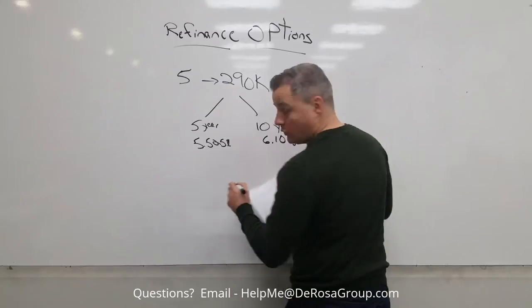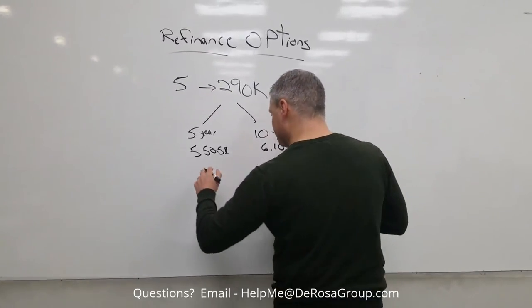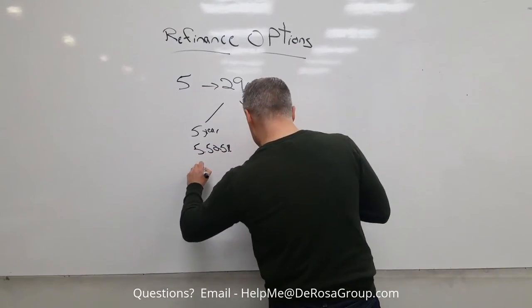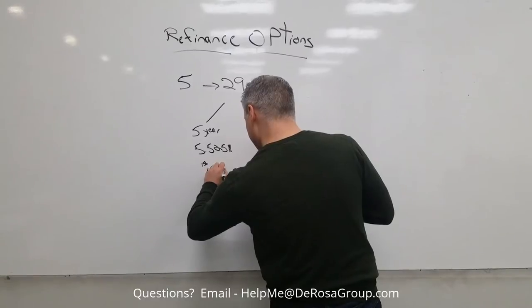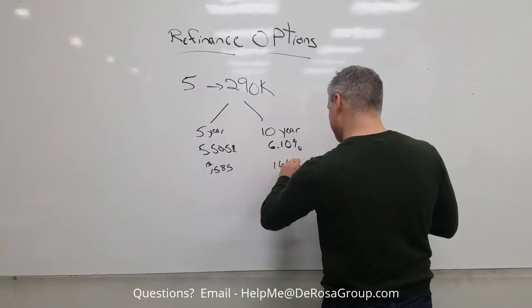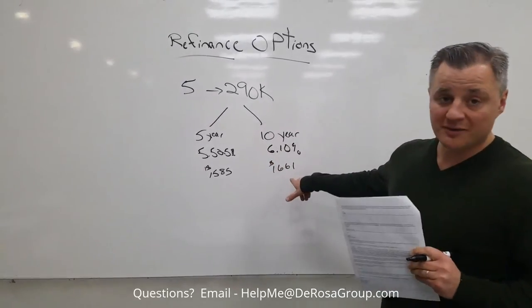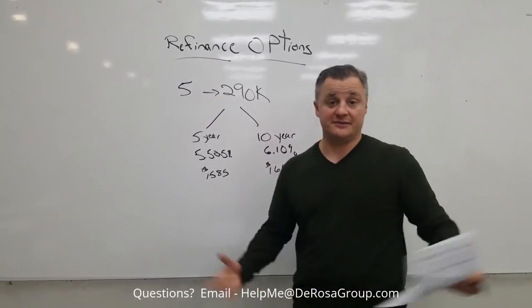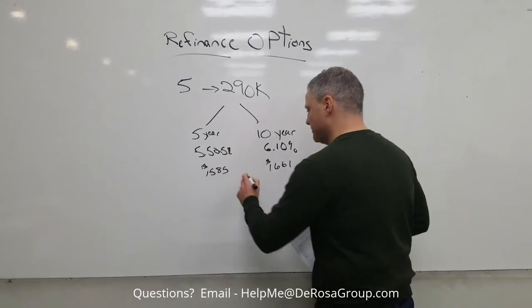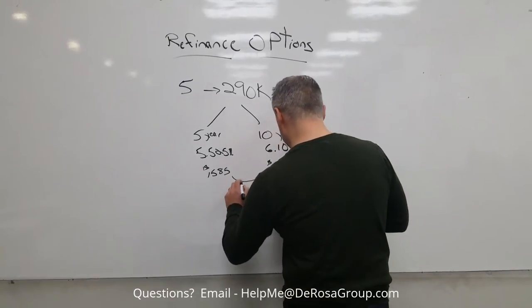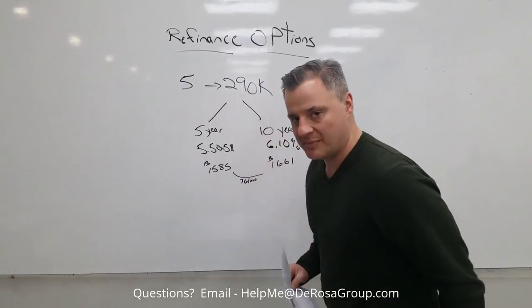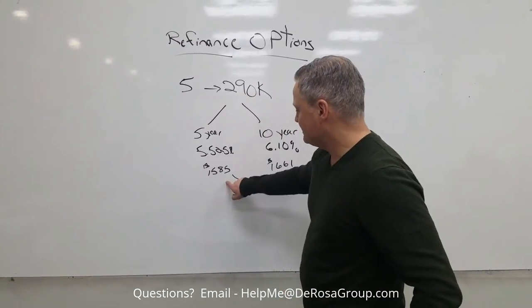That takes the payment, according to Eddie. I didn't verify this, but let's just trust Eddie here. Eddie's telling us that his payment at the 5.25 is $1,585, and the payment on the 10-year is $1,661. Now, not that much more money for the 10 years. You guys are like, it's a no-brainer, right? Maybe. You're right. It is pretty close. I know what you're thinking. It is a pretty close amount of money. It's only $76, right? $76 per month.